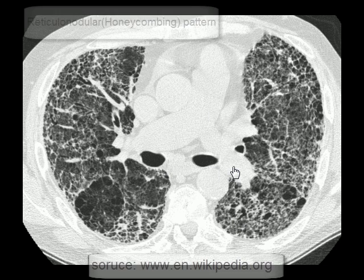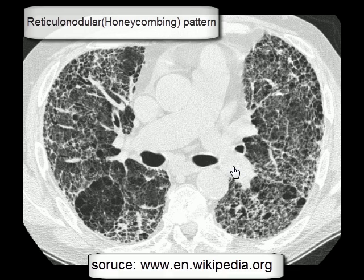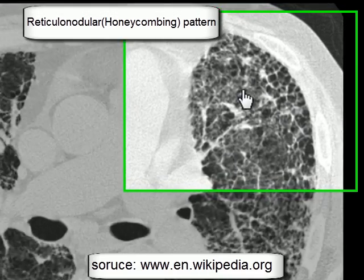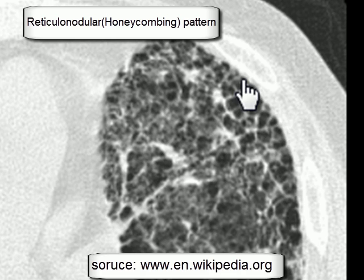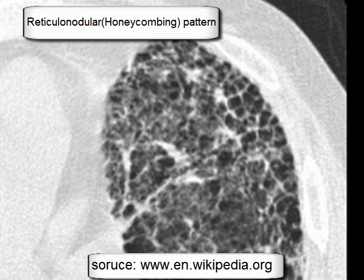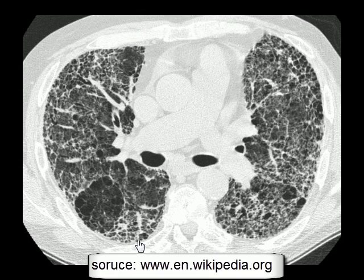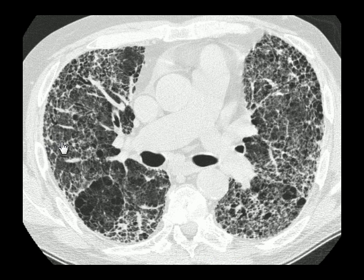A high resolution CT scan of the chest in a different patient shows a honeycomb pattern — honeycomb cysts and fibrosis are visible throughout both lungs, and some of the interstitial lines are also clearly visible. This is an HRCT of the chest.